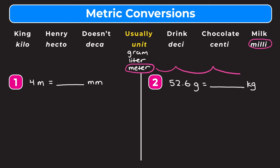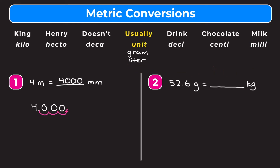We're going to take the decimal point in our original number and rewrite it as 4.0. We move it three places to the right — one, two, three — and fill in those spots with zeros. So we get that 4 meters is equal to 4,000 millimeters.